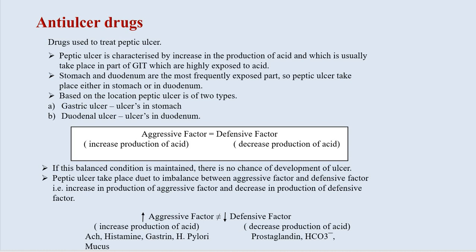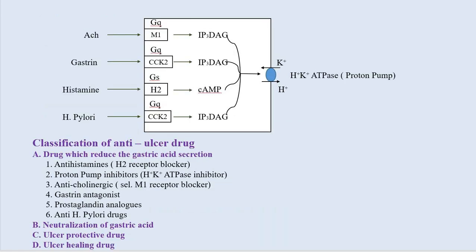The basic reason for the development of peptic ulcer is the imbalance between aggressive factors and defensive factors — that is, increase in production of aggressive factors and decrease in production of defensive factors. Here is the general mechanism for acid production in the GIT. Let us consider this square as a gastric parietal cell. HCl is secreted from the gastric parietal cell, also known as oxyntic cell because these cells are stained with the oxyntic dye.